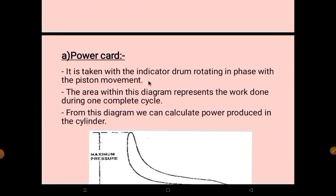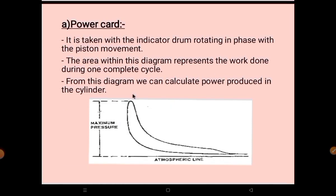The first type is the power card. It is taken with the indicator drum rotating in phase with the piston movement — this point is very important to remember. The area within this diagram represents the work done during one complete cycle. From this diagram we can calculate the power produced in the cylinder.